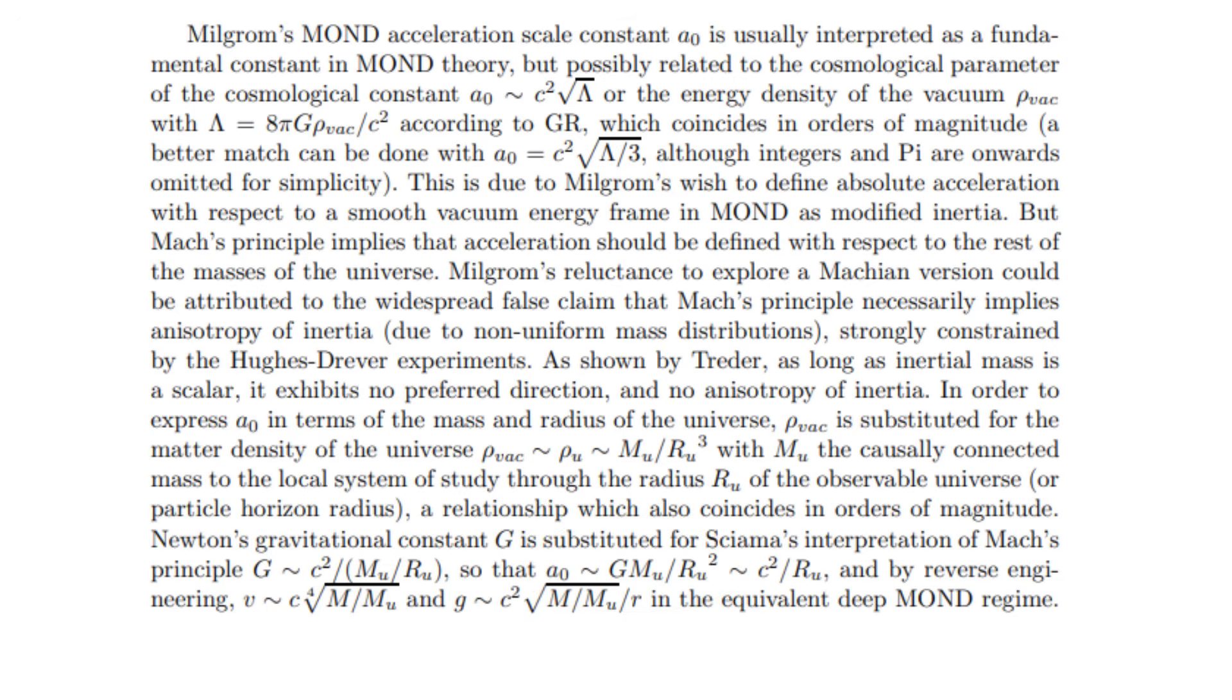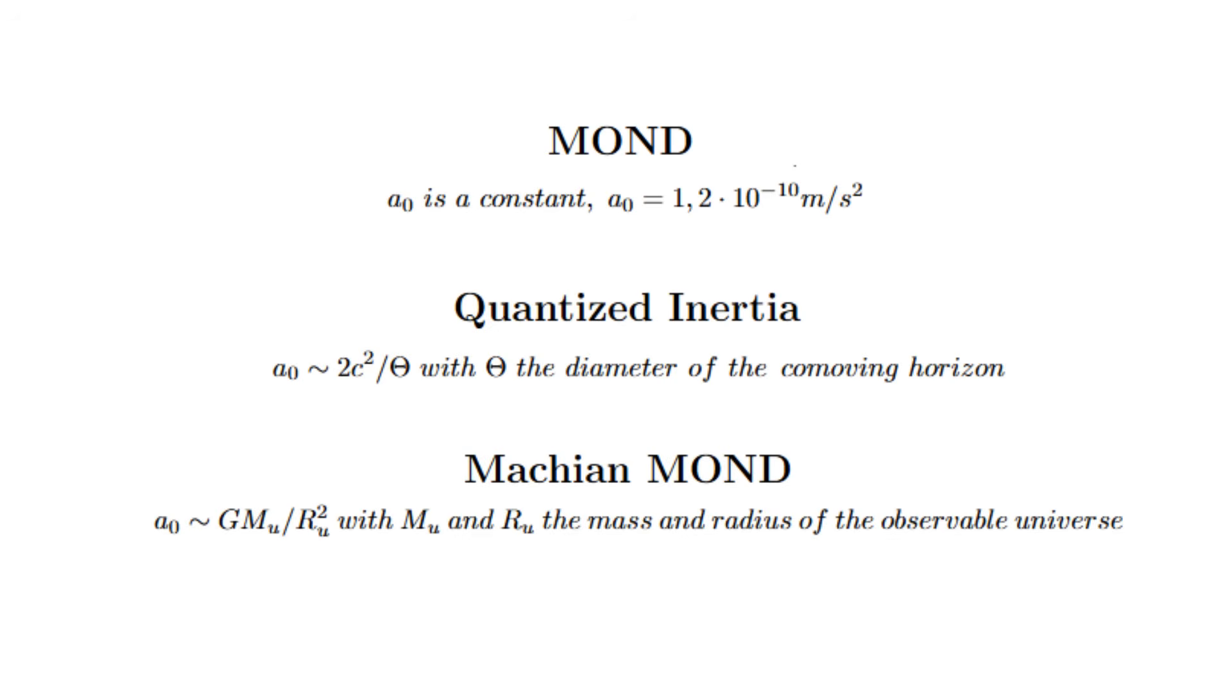This, as in the case of Quantized Inertia relationship, also matches in order of magnitude the acceleration scale constant in MOND. And while Quantized Inertia directly predicts a varying acceleration scale along the universe expansion, my Machian version does not, if the gravitational field intensity of the observable universe hasn't changed along the cosmic expansion. And the question is, has it?